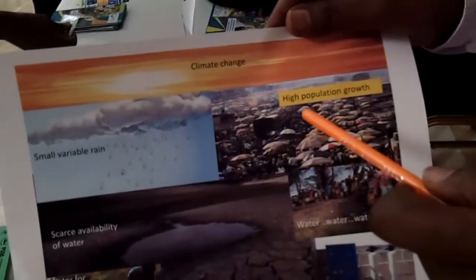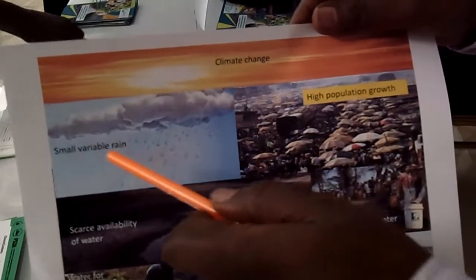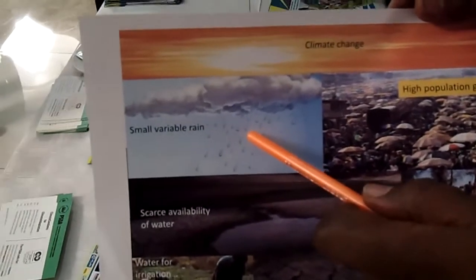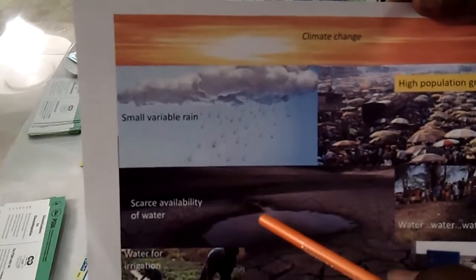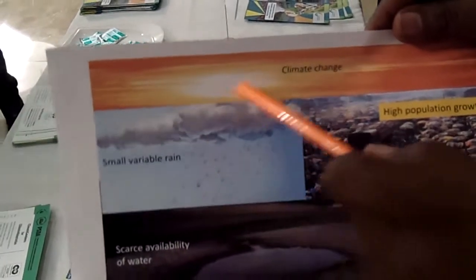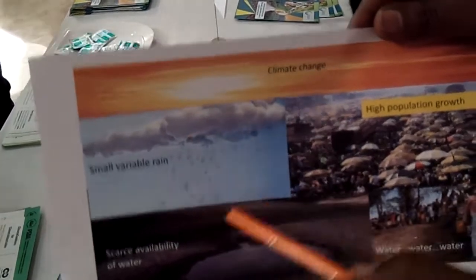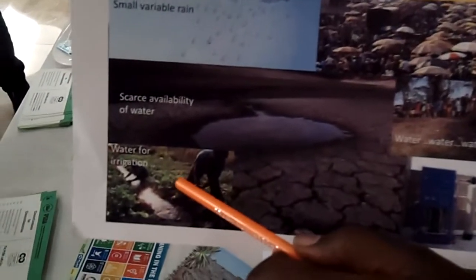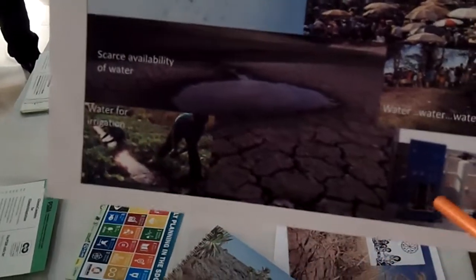The first example: we do have prevailing climate change. This climate change can cause, for example, small variable rains, and this ultimately will result in scarcity of availability of water. This is the context we have in many places of the Earth. In this context, we are trying to adapt. One adaptation example is irrigation — water for irrigation — and maybe hydropower.